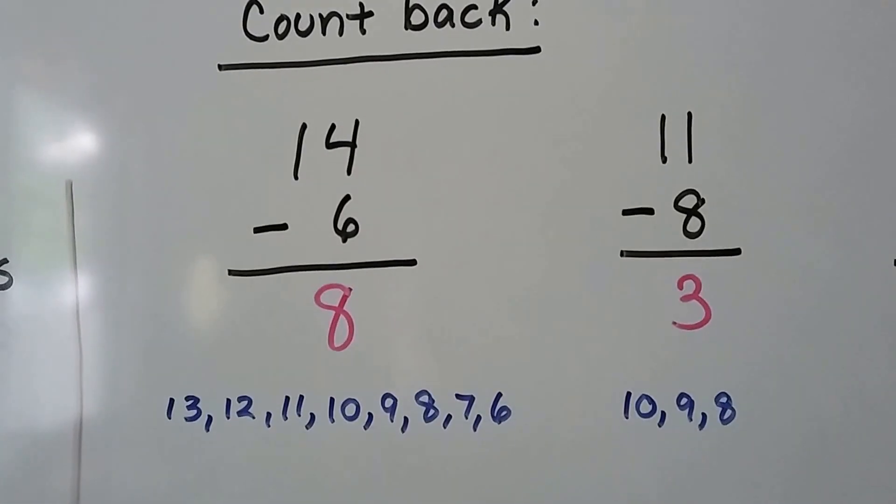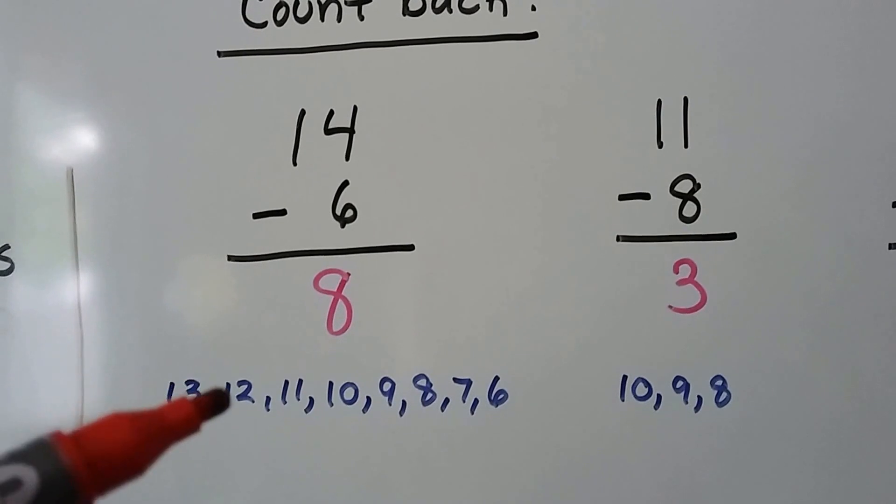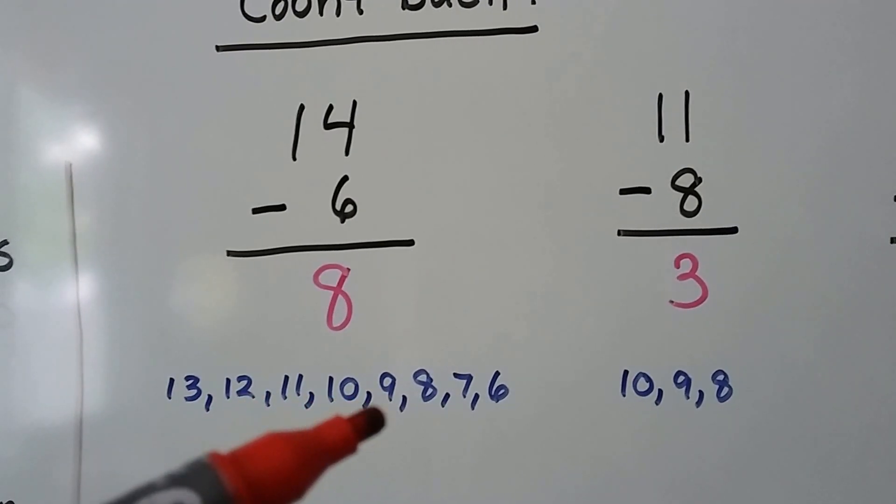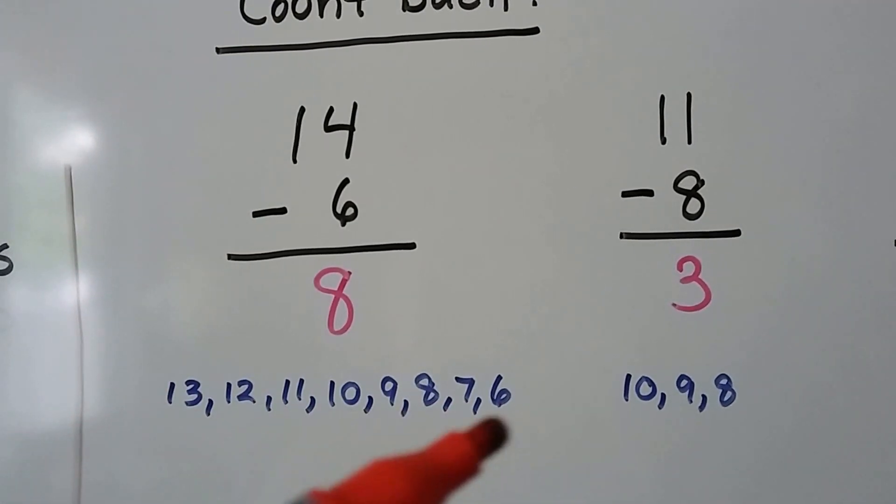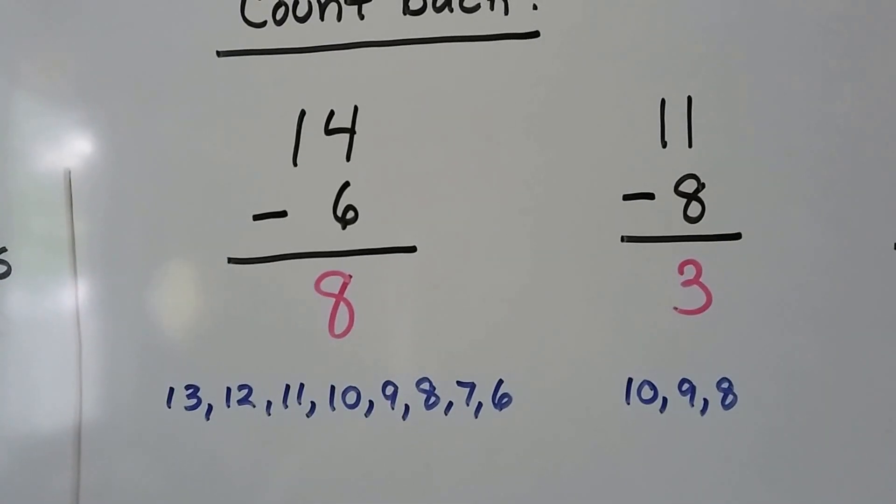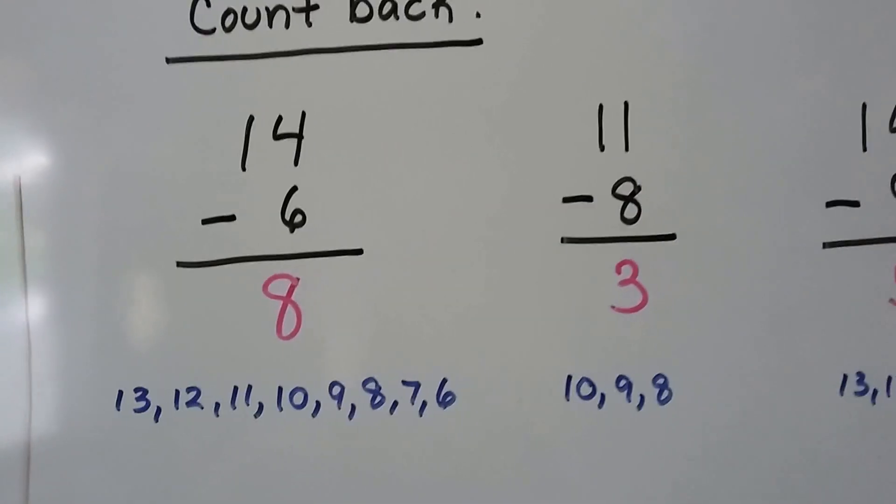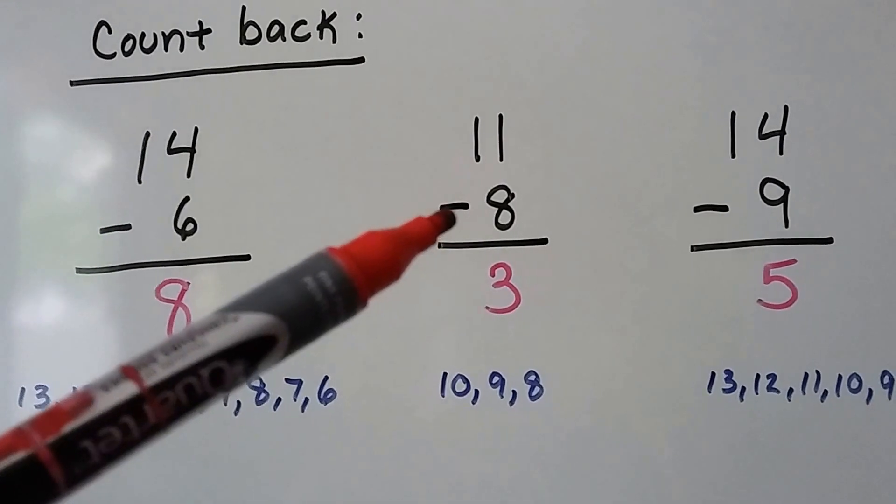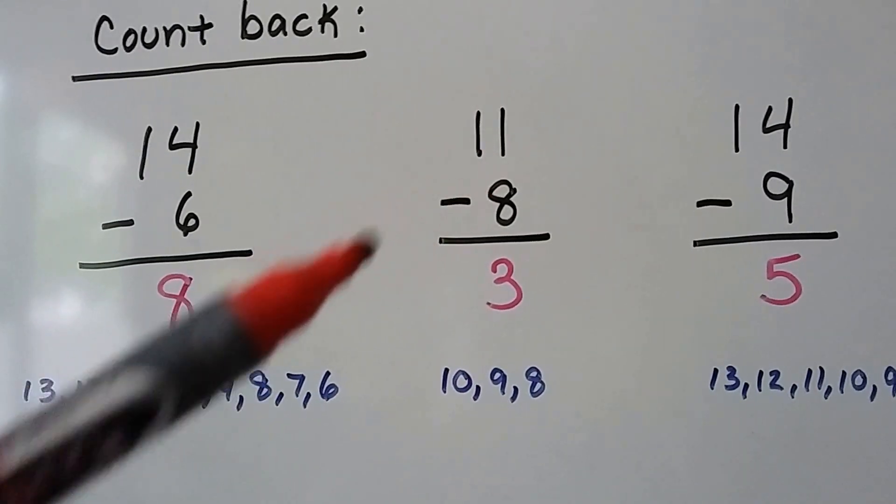We see 13, 12, 11, 10, 9, 8, 7, 6. It's 8 numbers. 14 minus 6 is 8. For 11 minus 8, we count back from the 11 until we get to 8: 10, 9, 8. It's three numbers. 11 minus 8 is 3.